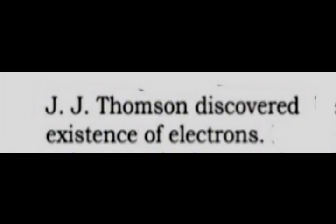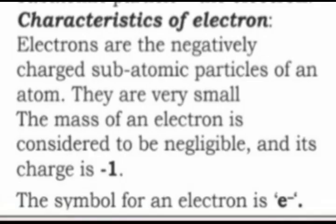Question two: Who discovered the electron? Write the characteristics of an electron. J.J. Thomson discovered the existence of the electron. Characteristics of electrons: Electrons are the negatively charged subatomic particle of an atom. They are very small. The mass of an electron is considered to be negligible and its charge is minus one. The symbol for an electron is E minus.